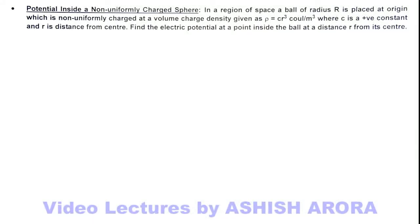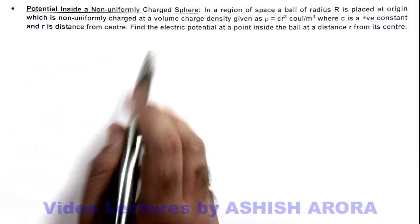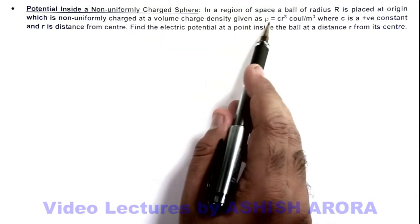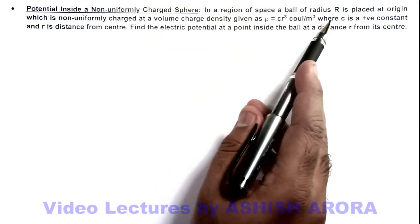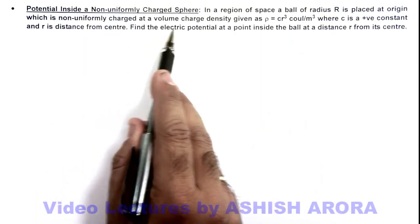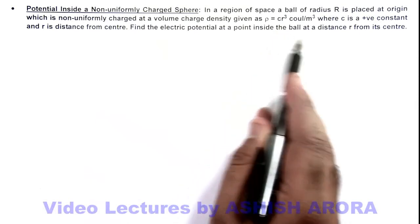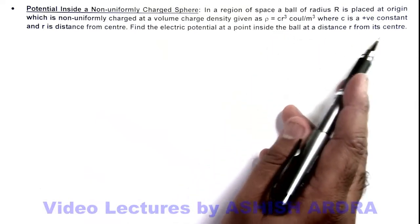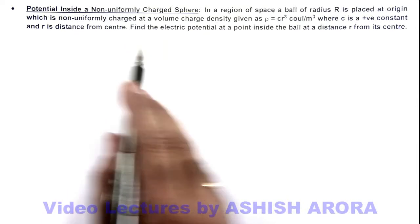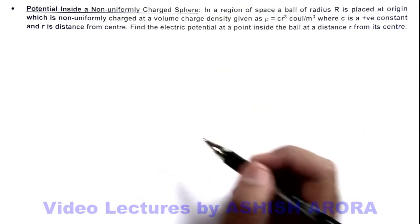In this illustration we are going to calculate the potential inside a non-uniformly charged sphere. We are given that in a region of space, a ball of radius R is placed at the origin, which is non-uniformly charged with a volume charge density given as ρ = cr³, where c is a positive constant and r is the distance from the center. We are asked to calculate the potential at a point inside the ball at a distance r from the center.